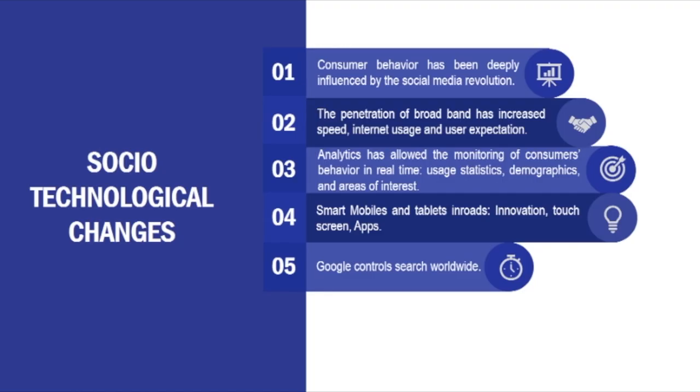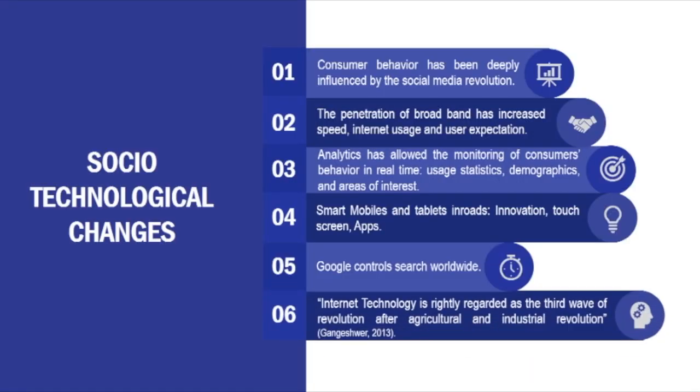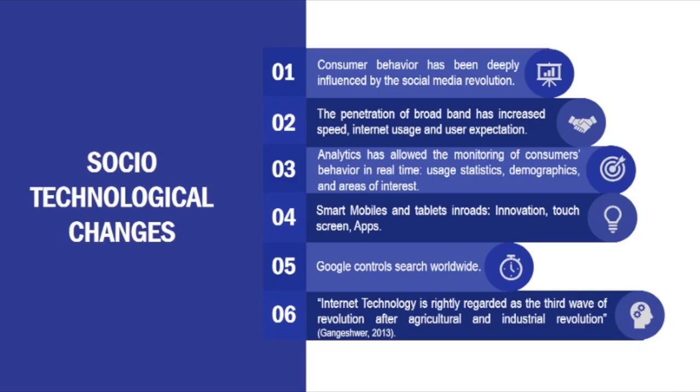Google controls search worldwide and is also analyzing everything that is happening — that analytics part is very important information which a marketer uses. Internet technology is rightly regarded as the third wave of revolution, after the agricultural and industrial revolution. India basically jump-started from industrial to internet technology — a soft industrial revolution — so that it could reach directly to the usage of software and internet technology for growth of its economy.